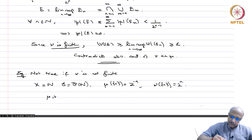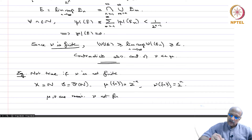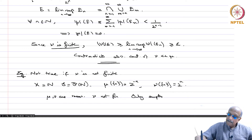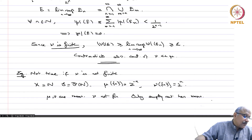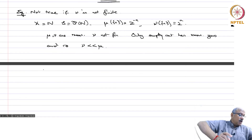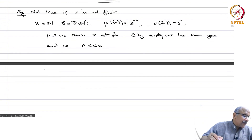Then mu, nu are measures but nu is not finite, because nu(X) = Σ 2^n = +∞ for any infinite set. The only set with nu-measure 0 is the empty set. So nu is absolutely continuous with respect to mu — there is no doubt, because the only set with mu-measure 0 is also the empty set.